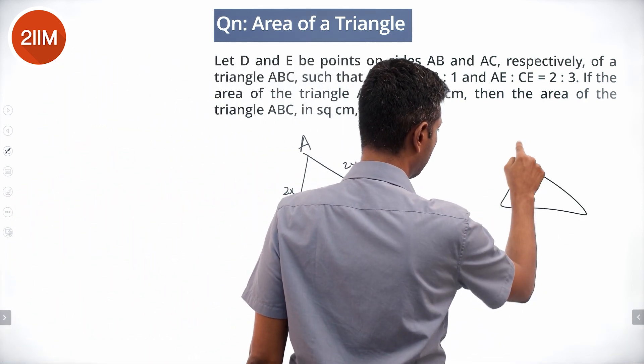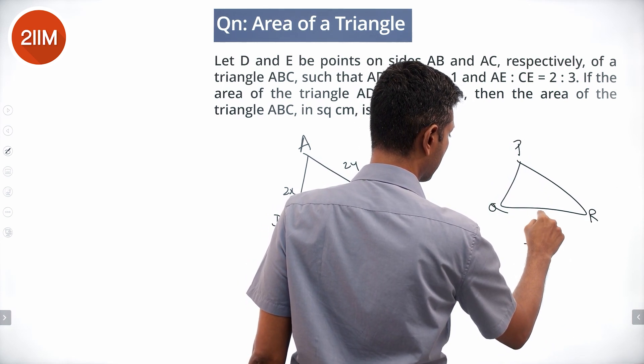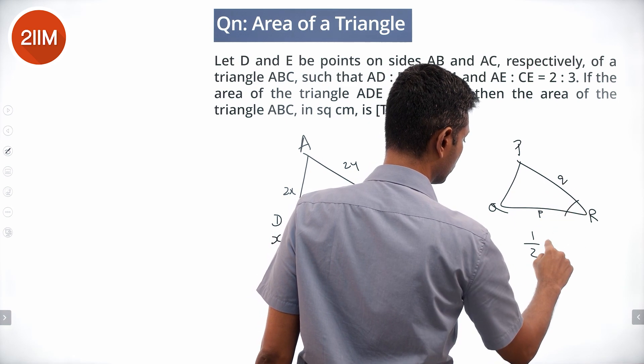Area of a triangle PQR is half PQ times QR times sine of angle R.